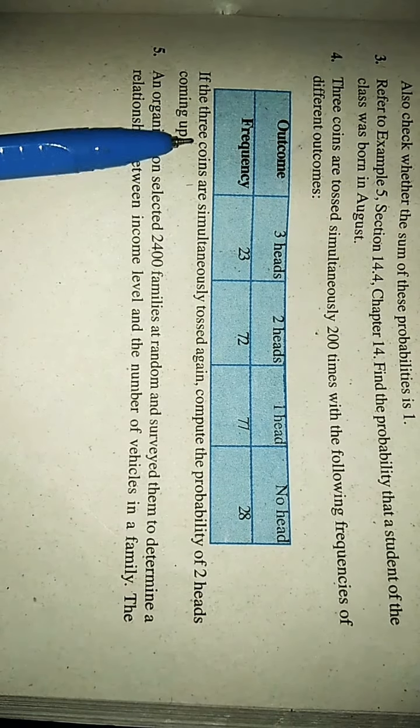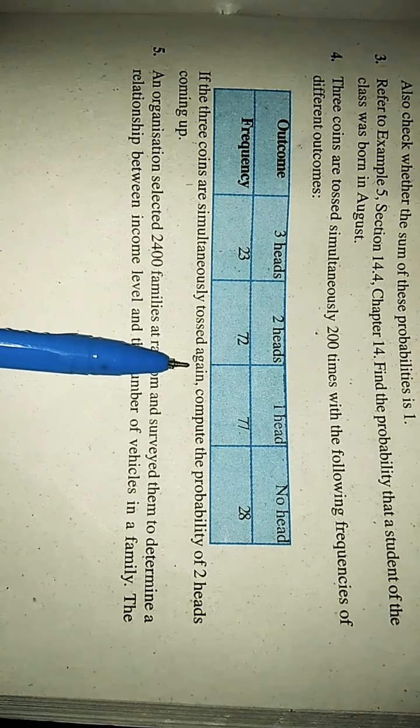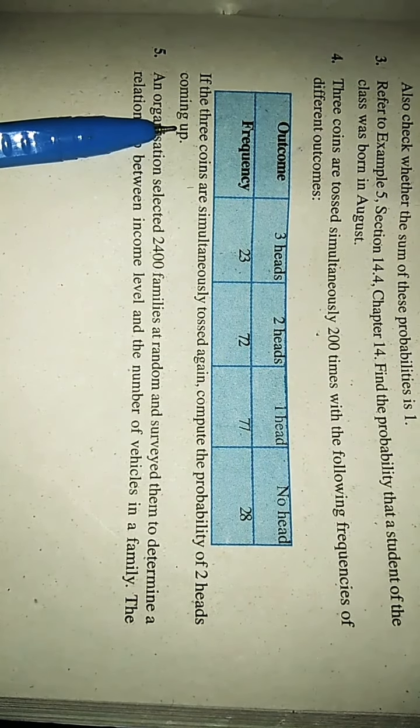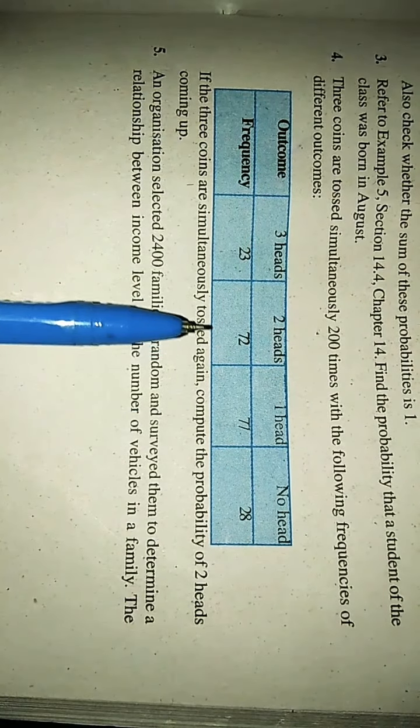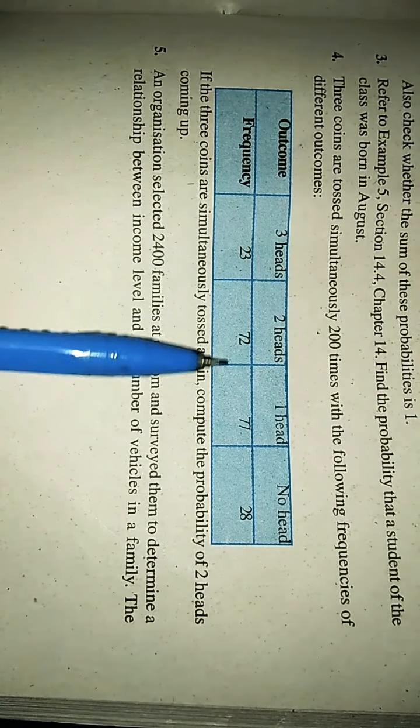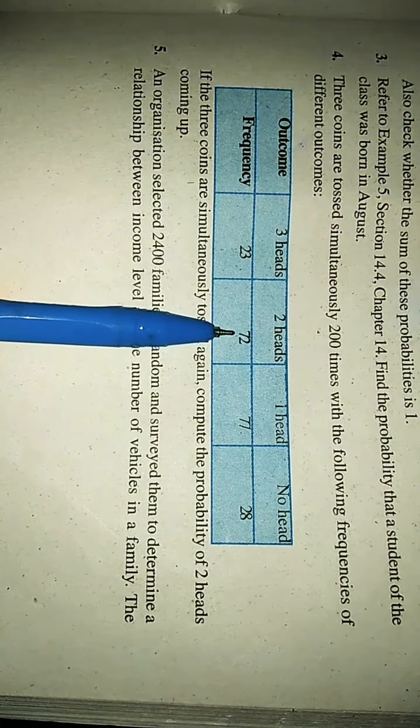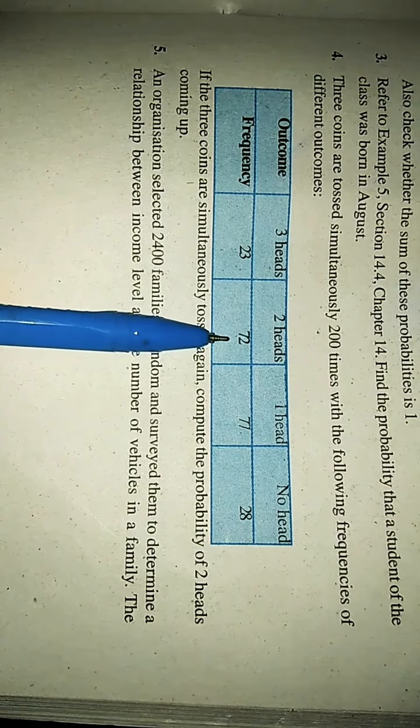What is asked? If the 3 coins are simultaneously tossed again, compute the probability of 2 heads coming up. Now, can you see in this table, we have already the frequency related to 2 heads. What is the frequency related to 2 heads? That is 72. We have to compute probability for this.